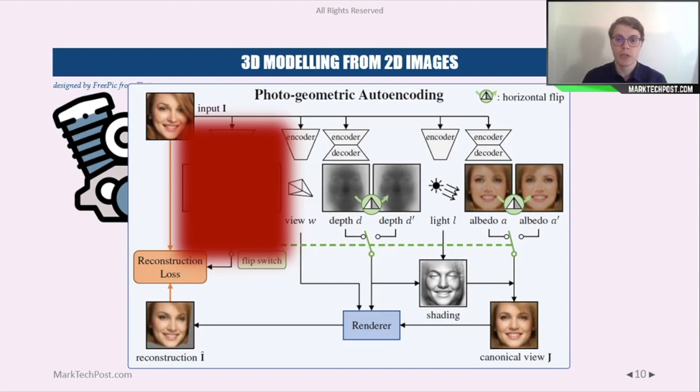In this slide you can see the schema of the model architecture. You can see on the top left corner the original image. From it, the model extracts the view, the depth, the light, and the albedo. On the bottom right corner you can see the shaded canonical view, which is composed using the albedo, the light, and the depth.